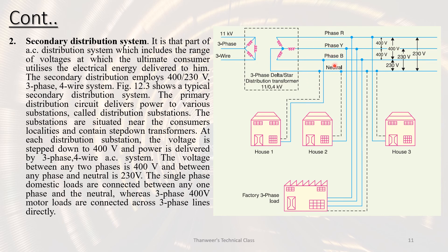In secondary distribution, a 3-phase 4-wire system is used. The 4th line is the neutral point. The phases are R, Y, and B. For 3-phase loads, the line-to-line voltage is 400 volts. For single-phase loads, the line-to-neutral voltage is 230 volts. This is the secondary distribution system used to supply both 3-phase and single-phase consumers.